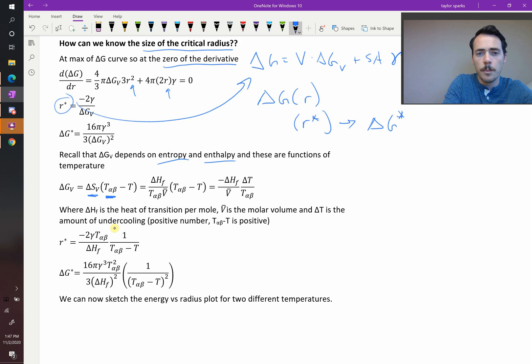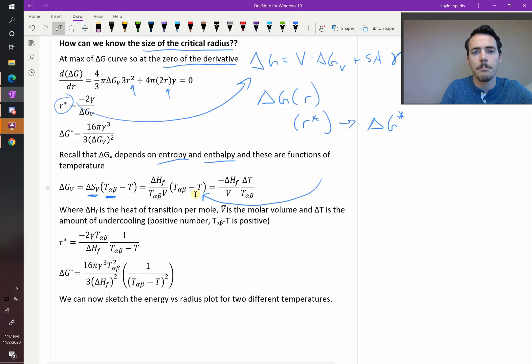But in reality, it can happen at a different temperature because of this surface area challenge. So T is the temperature that you're at. Or in other words, T alpha beta minus T is the amount of undercooling.